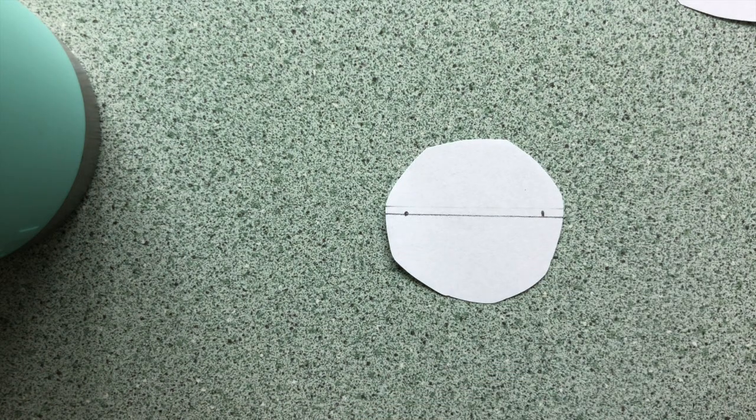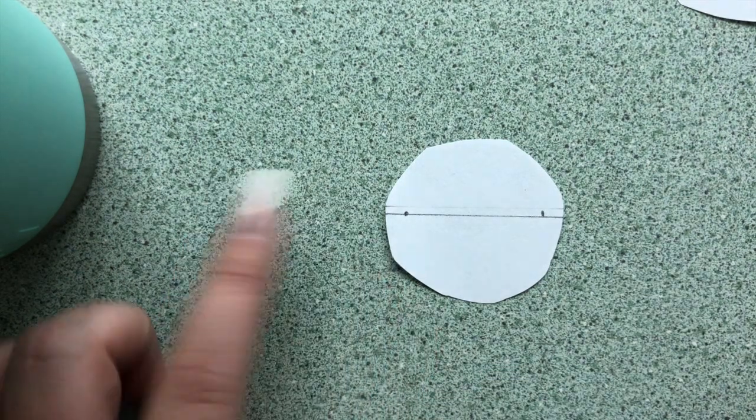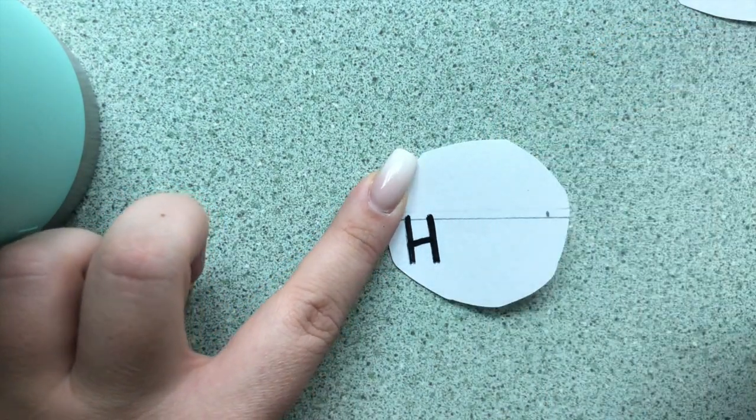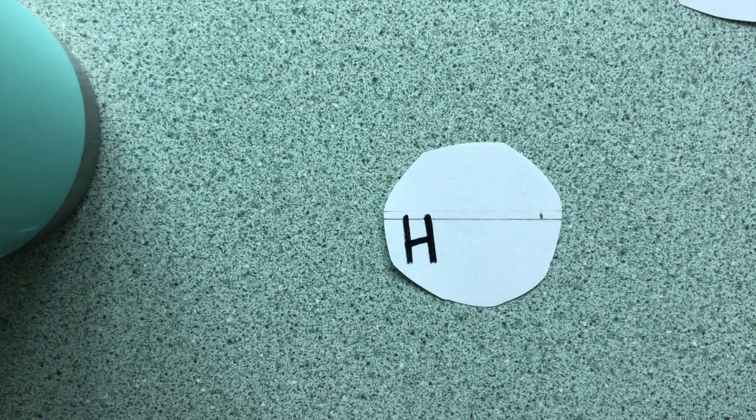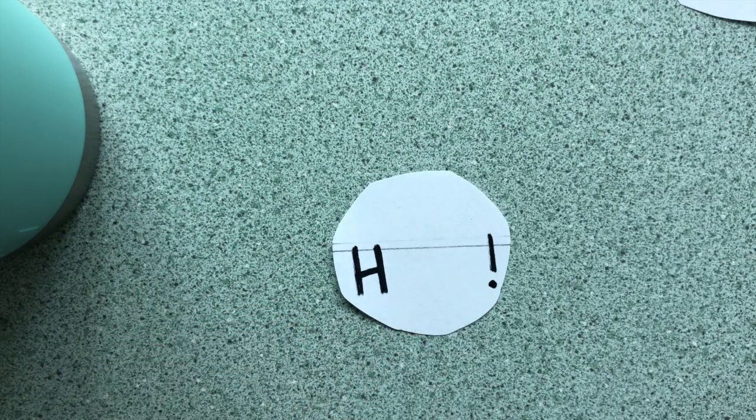On the left side of the first circle, start at the quarter inch mark, and write the letter H with a marker. At the other quarter inch point, draw a large exclamation point with your marker.